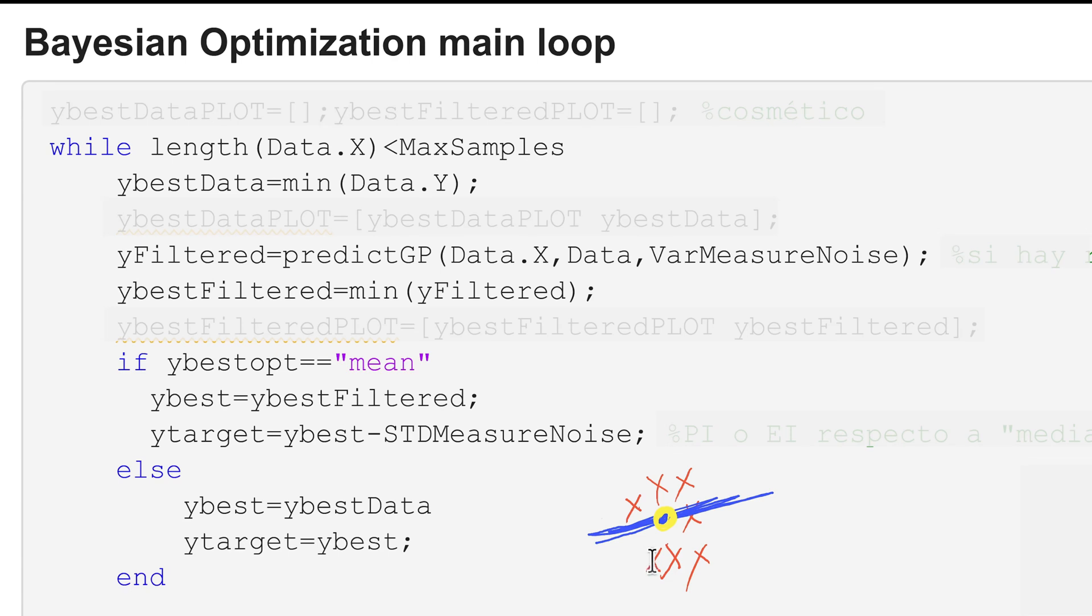So deciding on whether I take this filtered prediction or this absolutely best including measurement noise prediction is the first thing I must choose. In this particular example we will use this mean filtered estimate because it somehow cleans up measurement noise.